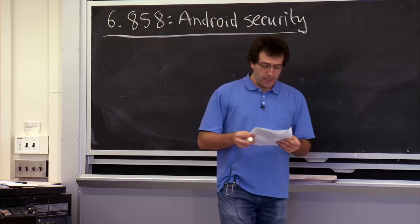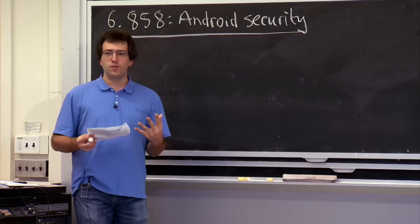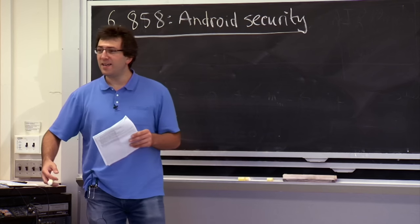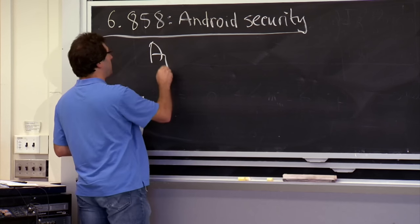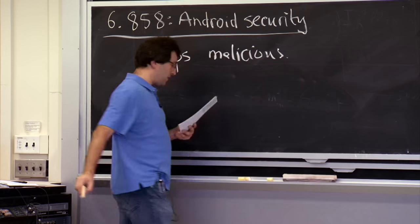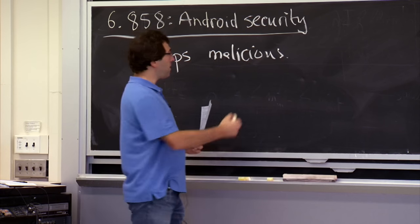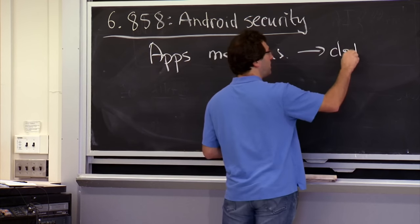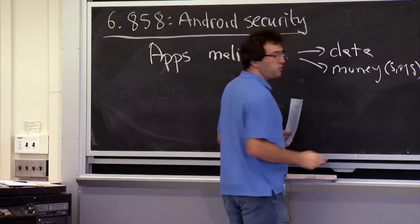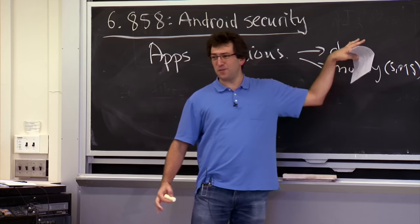Let's start by talking about what is the threat model — what are these guys worried about on a phone? There are applications that want to do malicious things. There's outright malicious applications that are just out to get you, maybe steal your private data. Things you might worry about: there's data, things that might cost money like sending an SMS message or making a phone call, or using the internet.